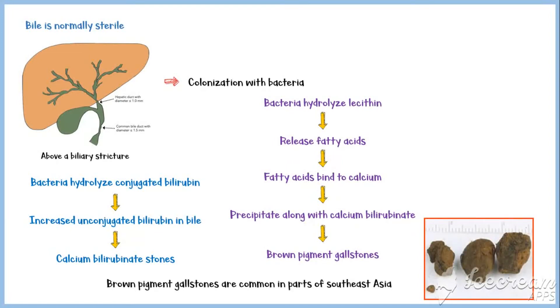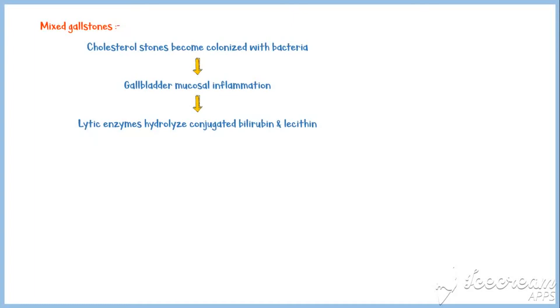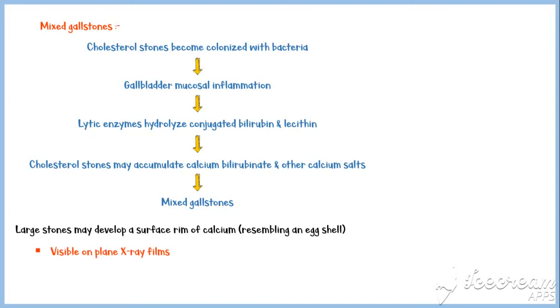Brown pigment gallstones are more common in parts of Southeast Asia. There is another type called mixed gallstones. When cholesterol stones become colonized with bacteria, they elicit an inflammatory reaction in the gallbladder mucosa. Lytic enzymes secreted by the inflammatory cells hydrolyze conjugated bilirubin and lecithin. So the cholesterol stones may accumulate calcium bilirubinate and other calcium salts, forming mixed gallstones. Larger stones formed in this manner may develop a rim of calcium resembling an eggshell, visible on a plain x-ray film.